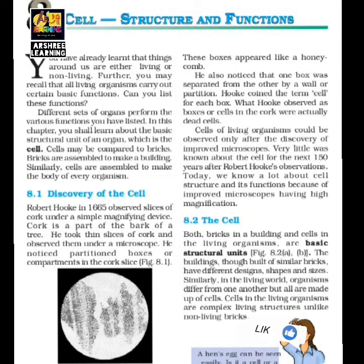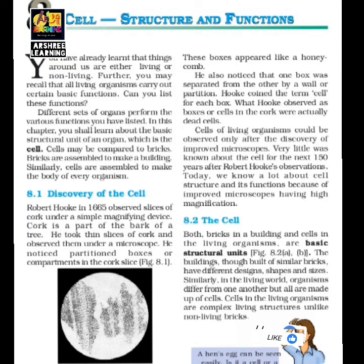He found that inside a cork there are small compartments or hole-like structures. These hole-like structures reminded him of cells. At that time, the word 'cell' was the name given to a small jail — prisoners are kept in small jails called cells. So he called these holes inside the cork 'cells' — they were boxes or compartments in the cork.